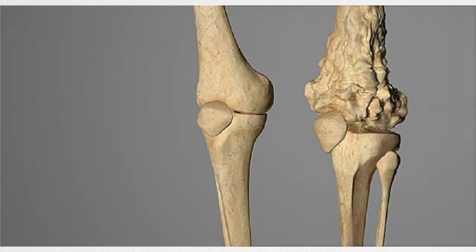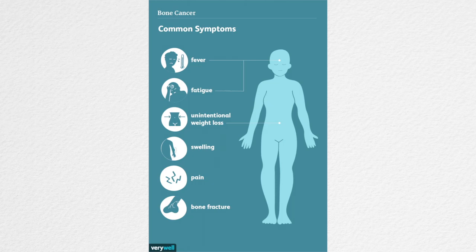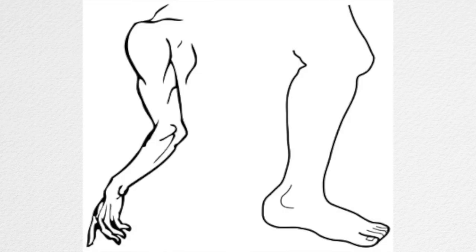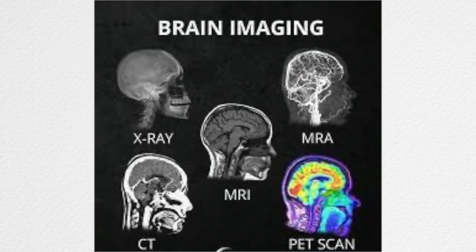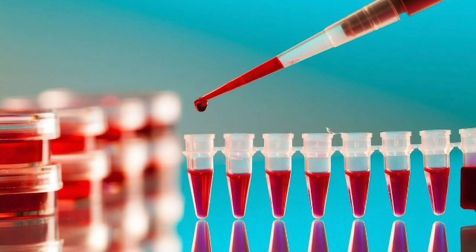Osteosarcoma is when a cancer forms in the bones, and this can lead to the bones getting weak and even breaking. The most common symptoms are pain, swelling, decreased movement, and limping. It is most common in longer bones such as the bones in our arms and legs, but it can occur in any bone in our skeletal system. MRI tests, PET scans, x-rays, and blood tests can identify osteosarcoma.